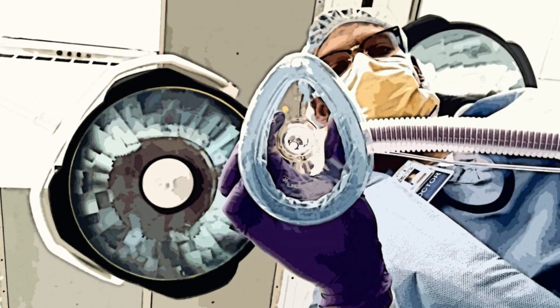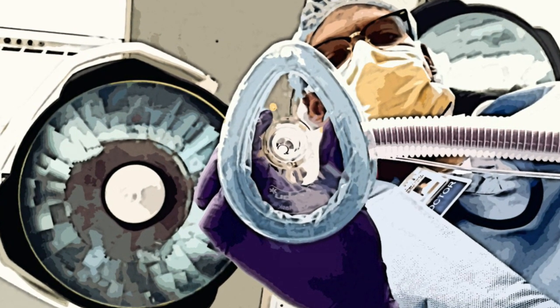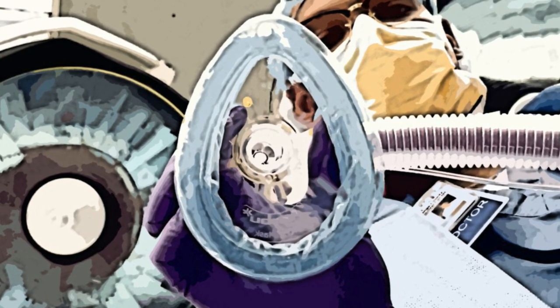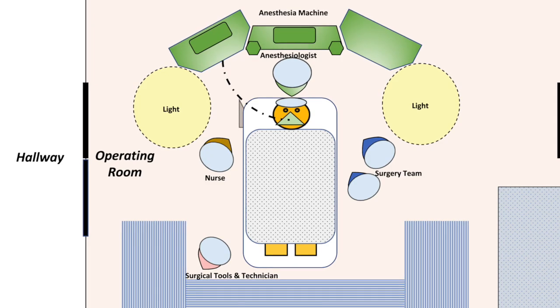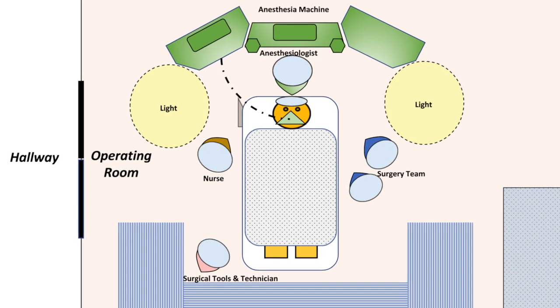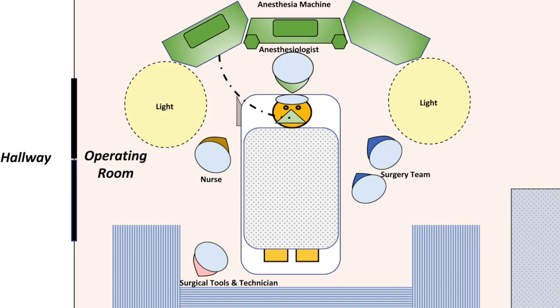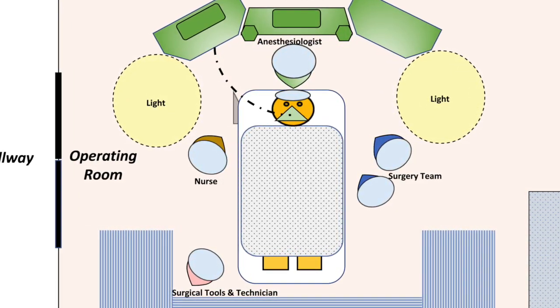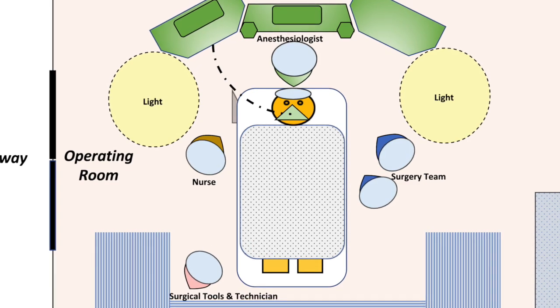We then give you oxygen through a mask and ask you to take deep breaths. After a few minutes, we give you medications through your IV and you comfortably go to sleep. This is a bird's-eye view of the operating room and you during this time. Once you are asleep, your eyes are protected and a breathing tube is put in place.